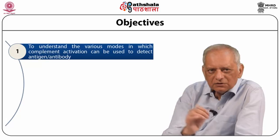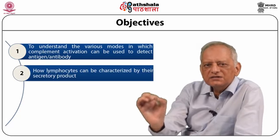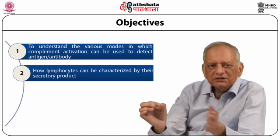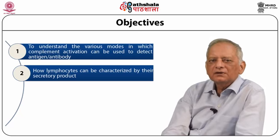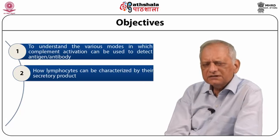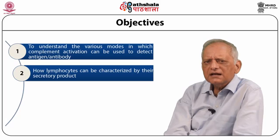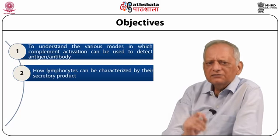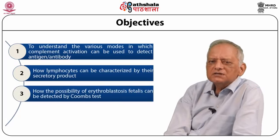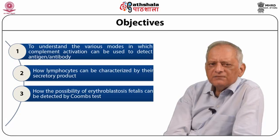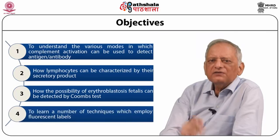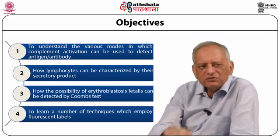We will also learn how the lymphocytes can be characterized by the secretory product which they throw out. We will revisit in a slightly different context how the possibility of erythroblastosis fetalis can be detected by Coombs test. We will also learn a number of techniques which employ fluorescent labels.